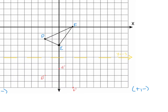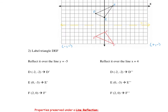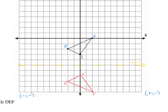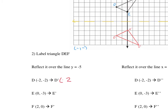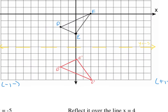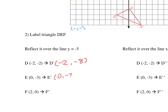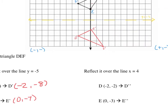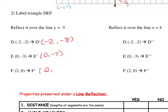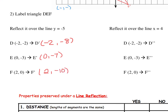I'll connect each of those points with straight lines using your MetroCard or ID. We just reflected this over the line y equals −5. Now let's label those points: D prime is (−2, −8), E prime is (0, −7), and F prime is (2, −10).